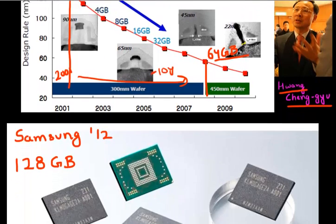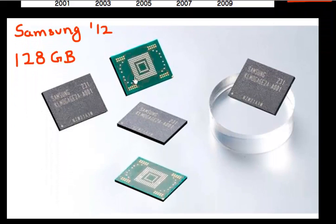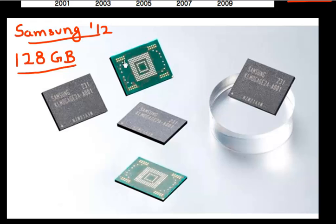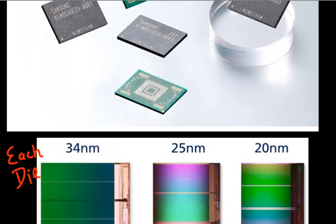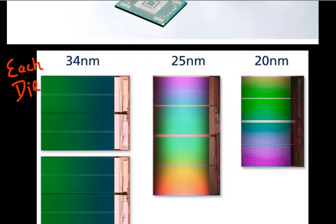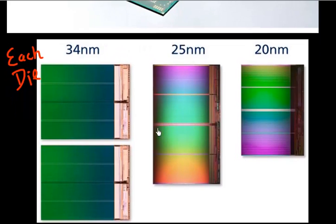More recently, Samsung announced a chip shipping in 2012 which has 128 gigabytes of storage available in one single chip. That chip is not one single die — it has multiple dies stacked on top of each other.